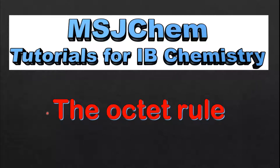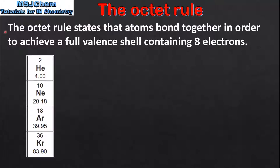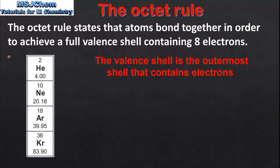This is MSJChem. In this video I'll be looking at the octet rule. The octet rule states that atoms bond together in order to achieve a full valence shell containing 8 electrons, and by doing so they achieve the same electron configuration as a noble gas.